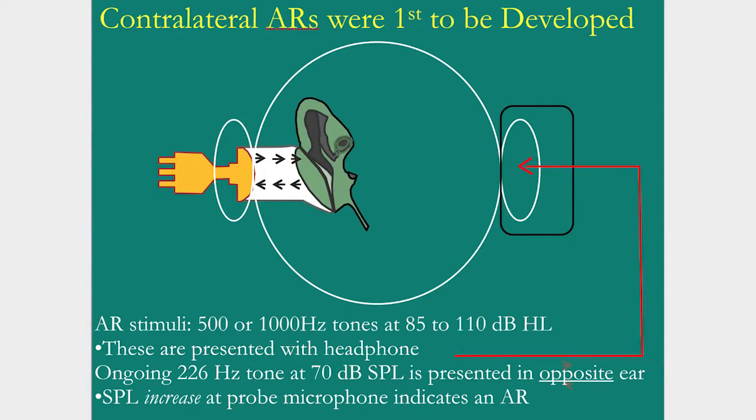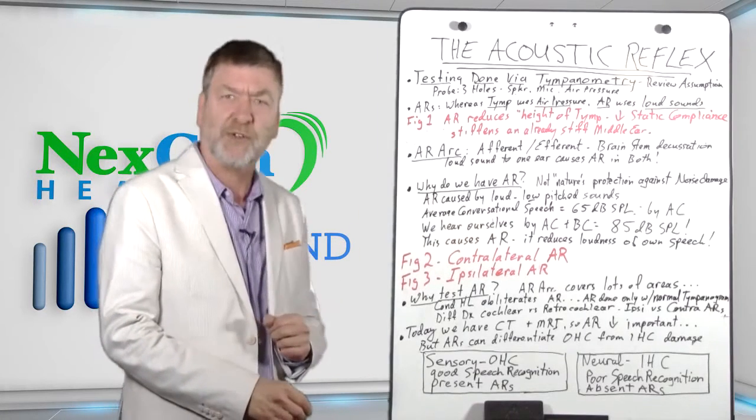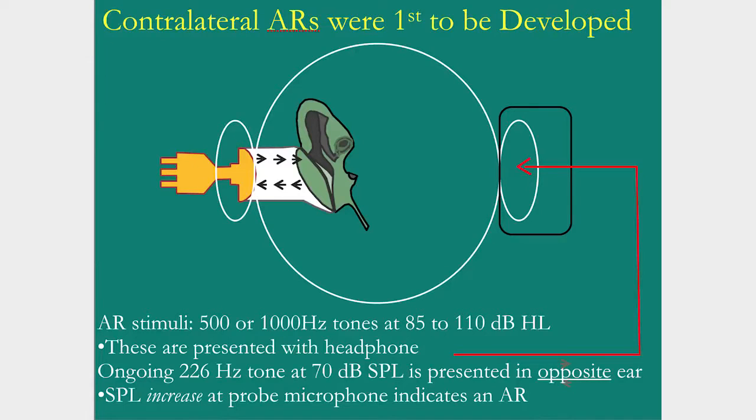Figure two, let's look at two different ways that the acoustic reflex is measured. Figure two shows the contralateral method of measuring the acoustic reflex. Figure three shows the ipsilateral method of testing the acoustic reflex. First, figure two, contralateral. This involves the tympanometer probe stuck in one ear, sealed with its three holes, the speaker emitting the constant low-pitched tone at 70 dB SPL.